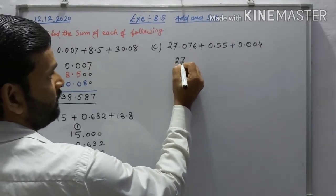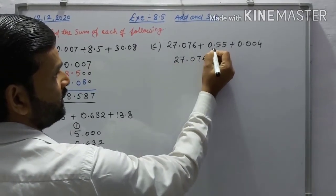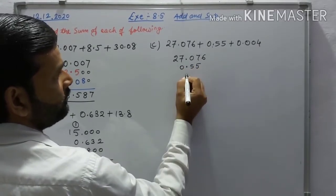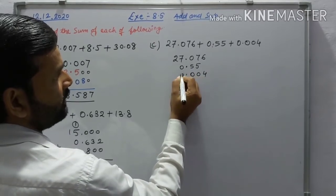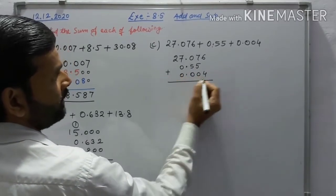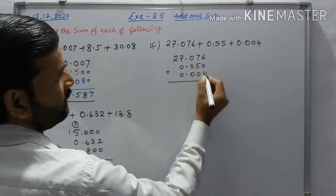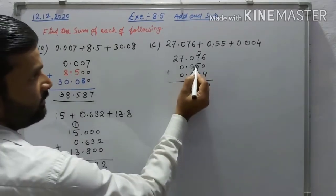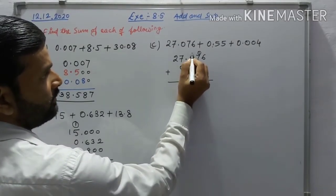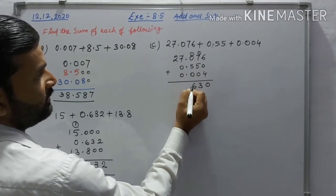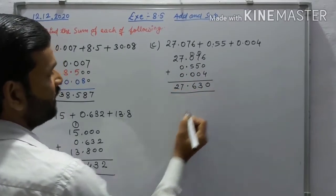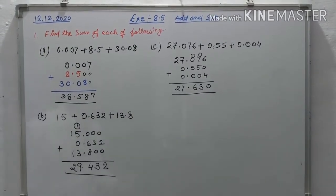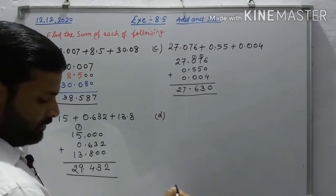Write 27.076, then 0.550, then 0.004. Adding: 0, 6, 4 — 10, carry 1. Then 7 plus 5 is 12, carry 1. Then 6 — the answer is 27.630.